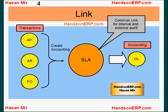Accounting eventually has to reach the general ledger module because that is the module that will let you run financial reports. But in between subledgers and the general ledger module there is the subledger accounting module. When you create accounting — either online or using the create accounting program for batch — the accounting lines actually get created in the subledger accounting module. Then you can run the transfer to GL program, which takes the accounting from subledger accounting module and creates accounting lines in the GL module.